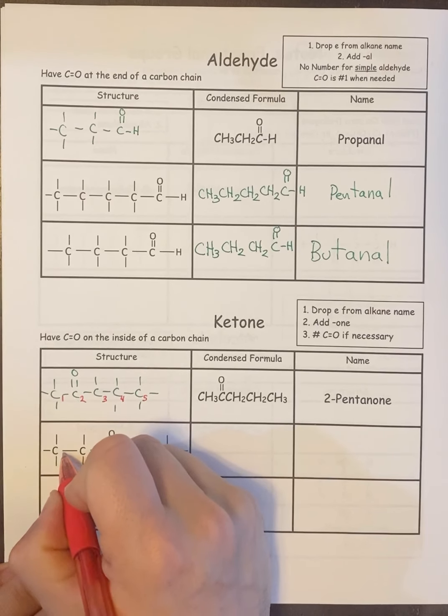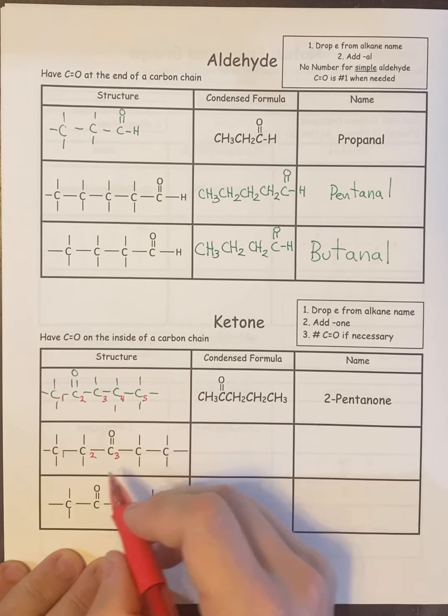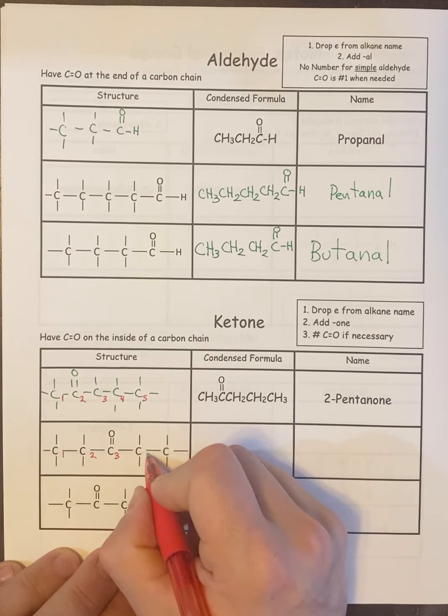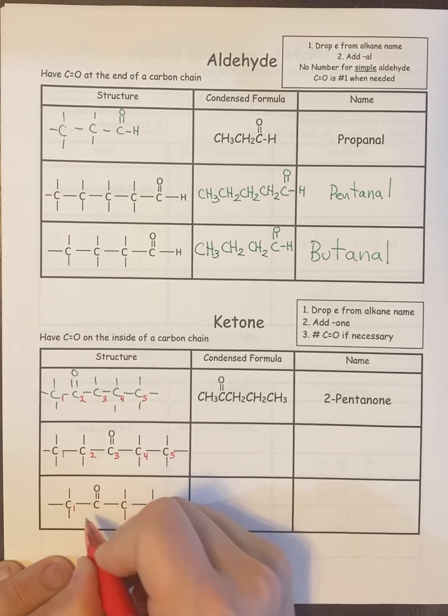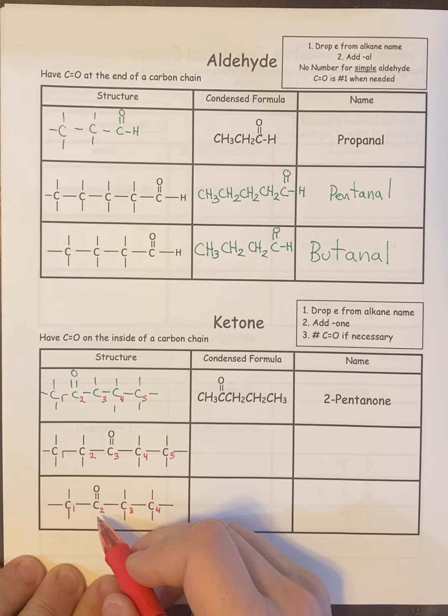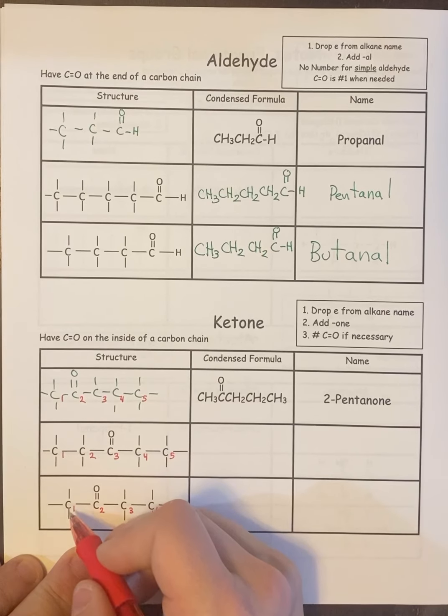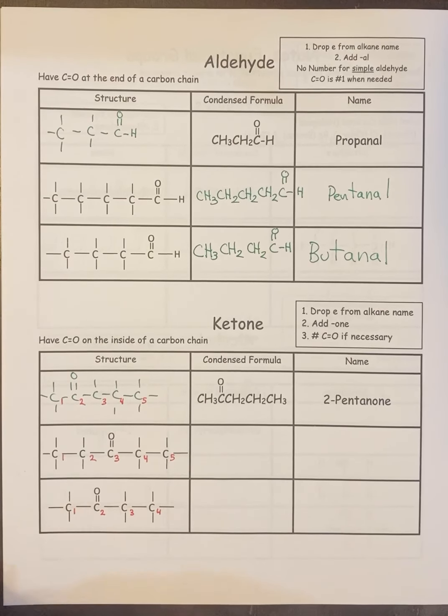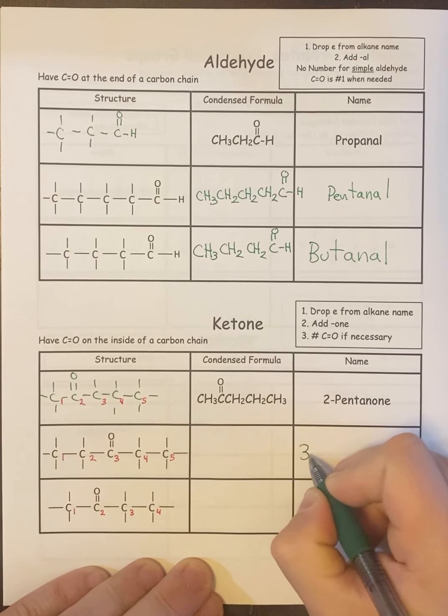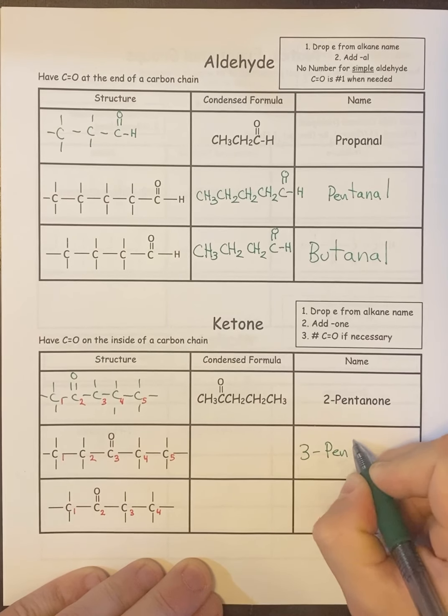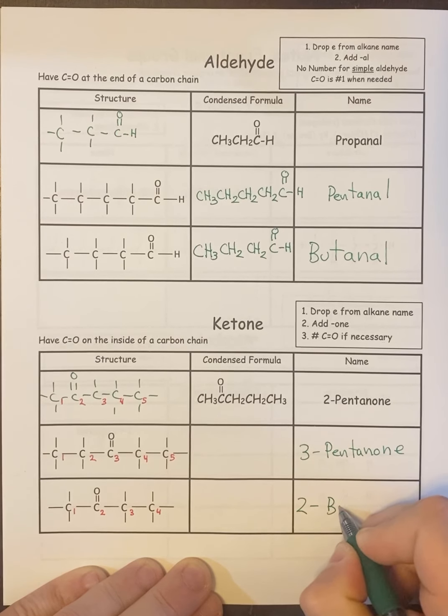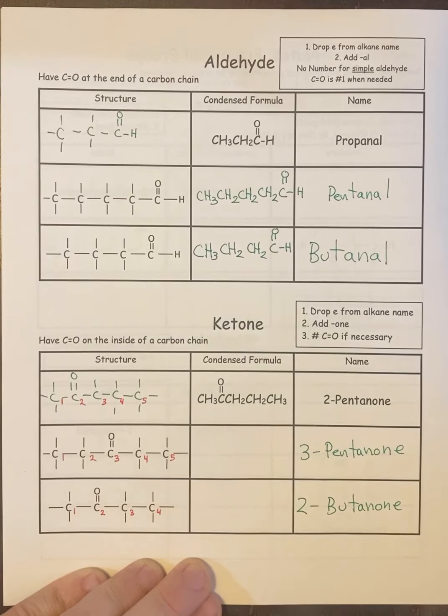So now if we do these guys, it doesn't matter if I number from the right or the left in this one, because again, the middle carbon would be carbon three either way. And then this one, it does matter. Because if I number it this way, it's two. And then technically, if I numbered it the other way, it would be three. So it does matter to a point. You'll see in a second. So let's name them. This would be 3-pentanone. And this would be 2-butanone. Or would it?